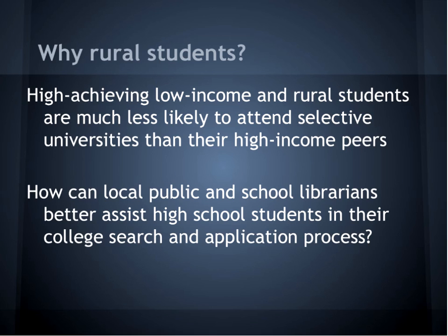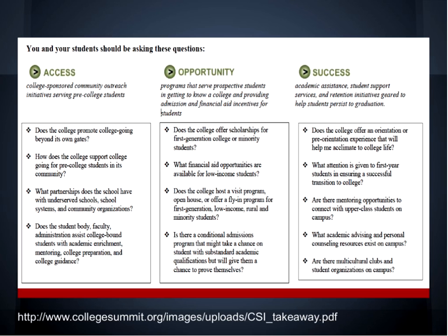So how can local public and school librarians help these students? This webinar is designed to give rural librarians with limited resources ideas and techniques for better preparing and guiding low-income rural students toward appropriate institutions of higher learning. The Center for Student Opportunity recommends that educators ask questions about the college process based on three categories: access, opportunity, and success. Access refers to the information available to students about different colleges, and how high schools, communities, and universities encourage students to seek higher education. Opportunity refers to the financial assistance and scholarships available to low-income or rural students, as well as support from universities during the application process, such as fee waivers. Success refers to programs in place at the university to mentor, orient, and support first-generation and low-income students once they come to campus.